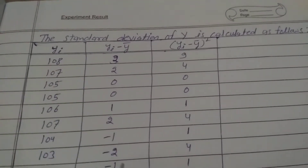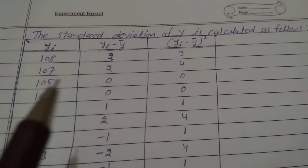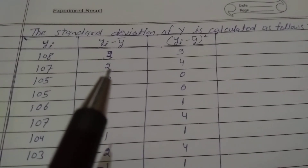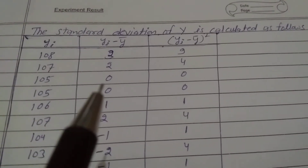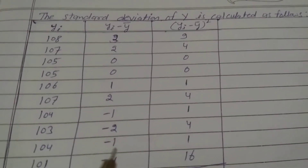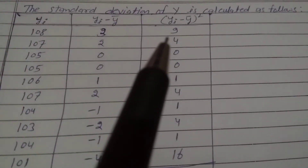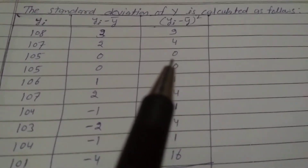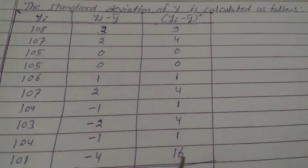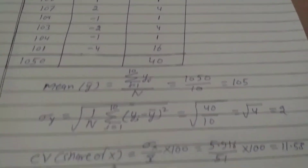Now calculate Yi minus Y-bar: 108 minus 105 is 3, 107 minus 105 is 2. The other Yi minus Y-bar values are: 0, 0, 1, 2, minus 1, minus 2, minus 4. The squared terms (Yi minus Y-bar) whole square are: 9, 4, 0, 0, 1, 4, 1, 4, 16. The summation of all squared terms is 40.